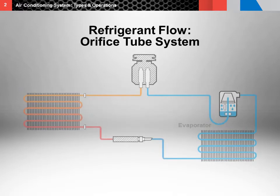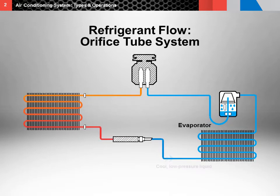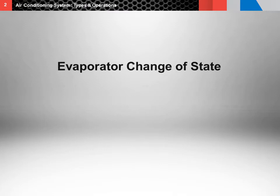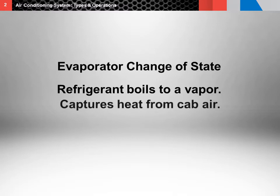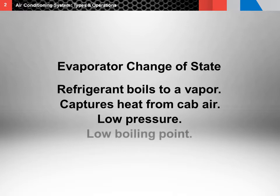Next, the refrigerant enters the evaporator as a cool, low pressure liquid. As it flows through the evaporator, it changes from a cool, low pressure liquid to a cool, low pressure vapor. This change of state allows the refrigerant to boil to a vapor, capturing heat energy from the vehicle cab ambient air. The reason the refrigerant boils in the evaporator is because it is under low pressure, which allows it to boil at a low temperature.